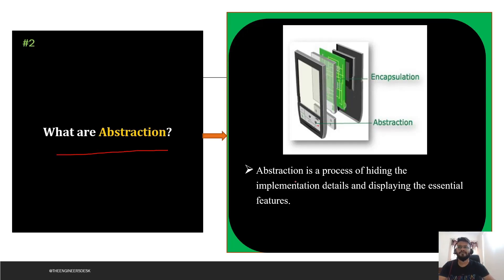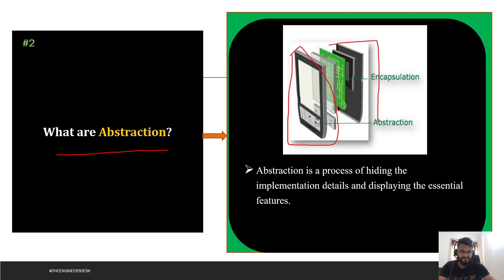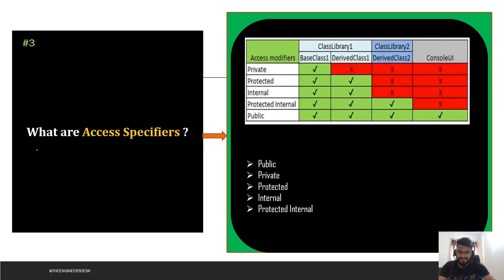The next question is: what is abstraction? Abstraction is a process of hiding the implementation detail and displaying only the essential features. For example, with a mobile phone, when you are typing something you don't know what is happening inside — that is the UI, and that is abstraction. The back-end logic is encapsulation, which we don't show to the end user.